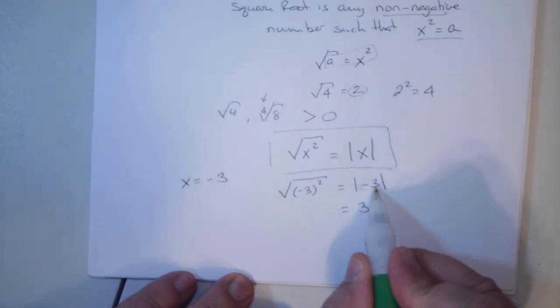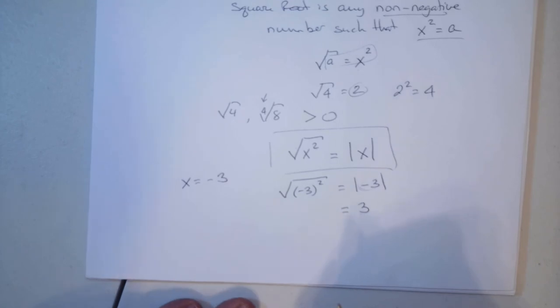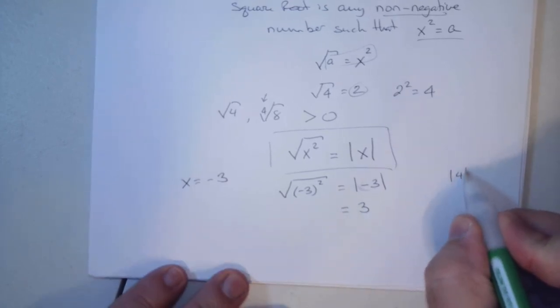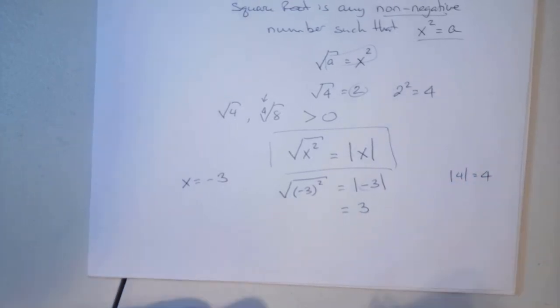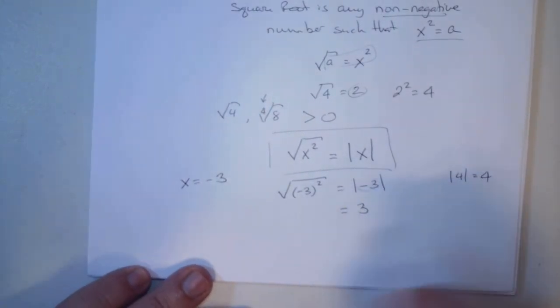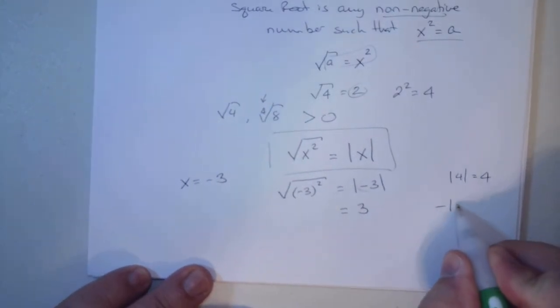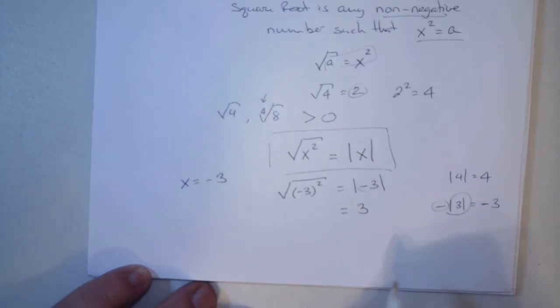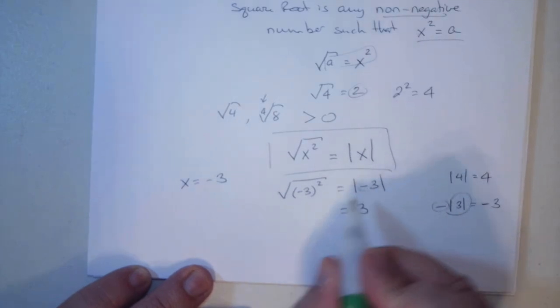Absolute values get rid of whatever's inside there. It loses the sign. The final answer, the value, only the number, it becomes positive. If it's positive already, then it stays positive. But the answer is always positive. Unless the absolute value has a negative out front. That negative stays there. Absolute value of 3 is 3, so the answer is negative 3.